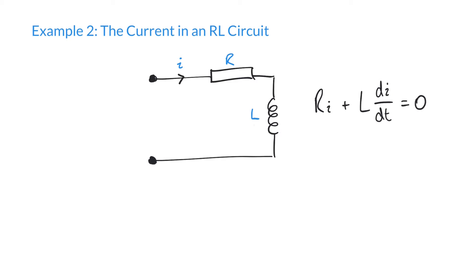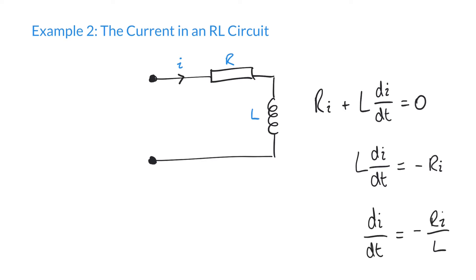R represents the resistance in our circuit and L represents the inductance. We won't go too much into electrical theory since this is a maths video. What we need to do is rearrange the formula — first getting the di/dt term by itself on the left-hand side. Subtracting Ri from both sides gives L(di/dt) = −Ri, then dividing both sides by L gives di/dt = −Ri/L.